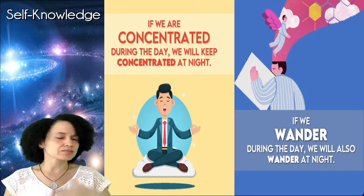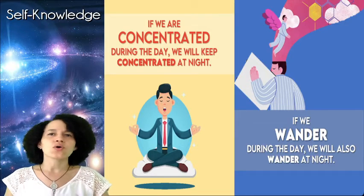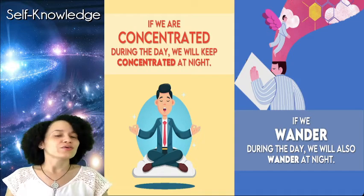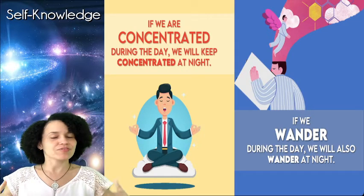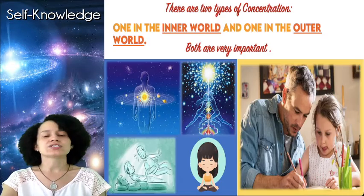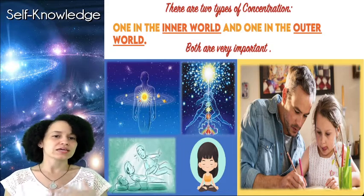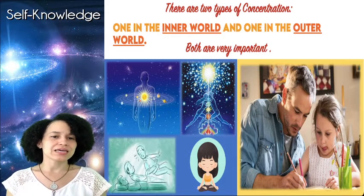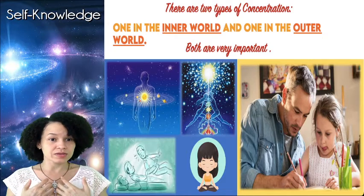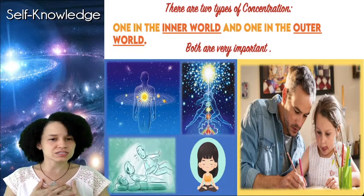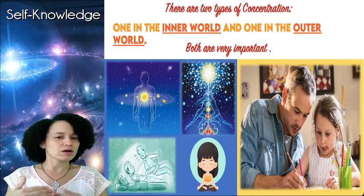That way we are going to exercise that concentration ability, so when we are trying to do our practices — meditation, astral projection, sexual transmutation, watching and praying — we are going to be able to have that concentrated state. We must know that there are two types of concentration: one in the inner world and the other in the outer world, and both are very important. We must always stay in that state of inner concentration, in constant self-remembering, and for this it is very useful to keep filling our heart.